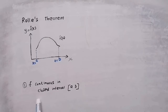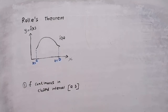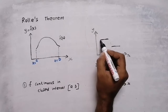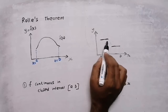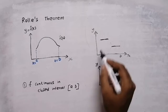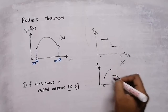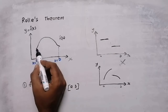To satisfy Rolle's theorem, the first condition is the function should be continuous in closed interval [a, b]. The function should be continuous. Here are some examples of discontinuous functions — there is a point of discontinuity between a and b. Rolle's theorem will not be applicable for these functions. So the function should be continuous in closed interval [a, b], including both A and B.